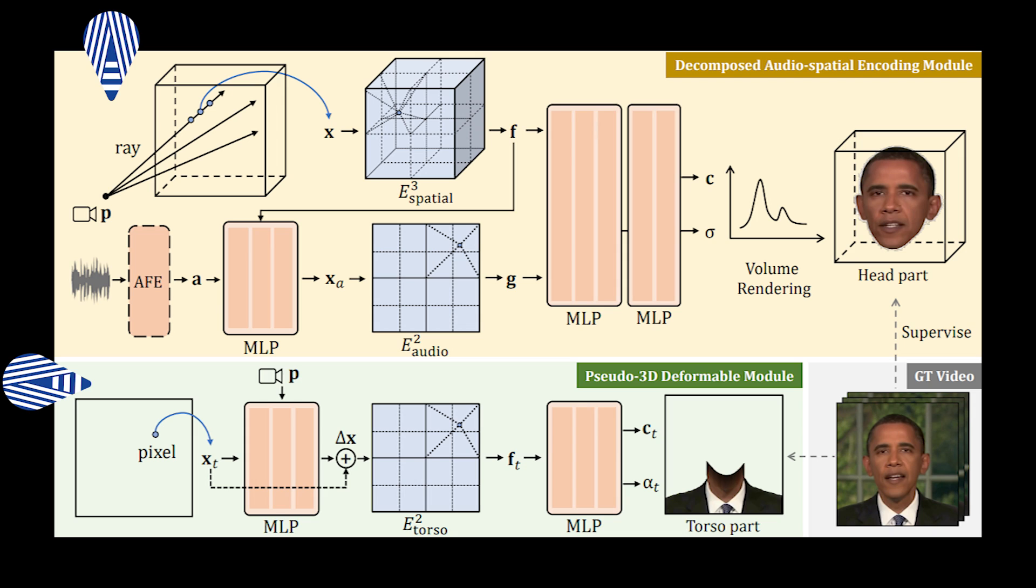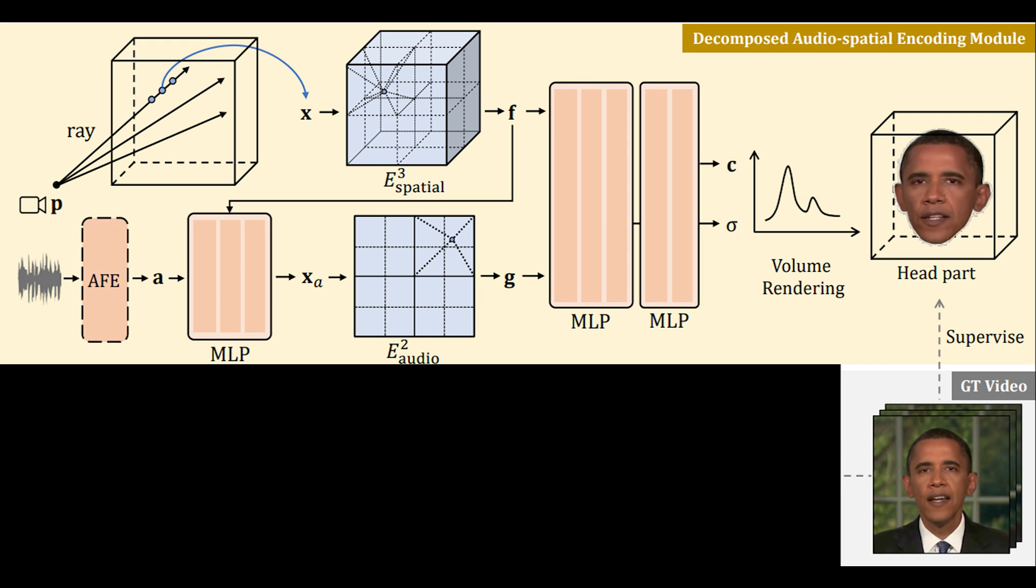The first two are related to the architecture of the model. More specifically, how they adapted the Nerf approach to make it more efficient and with improved motions of the torso and head. The first step is to make Nerfs more efficient.